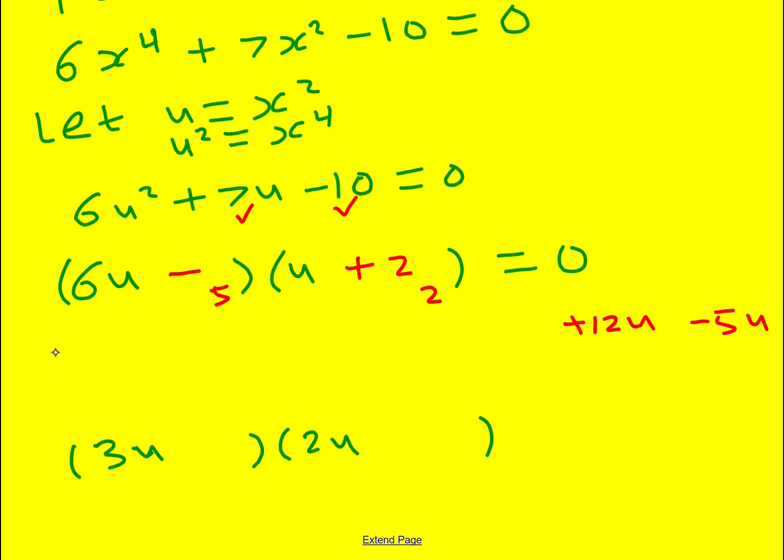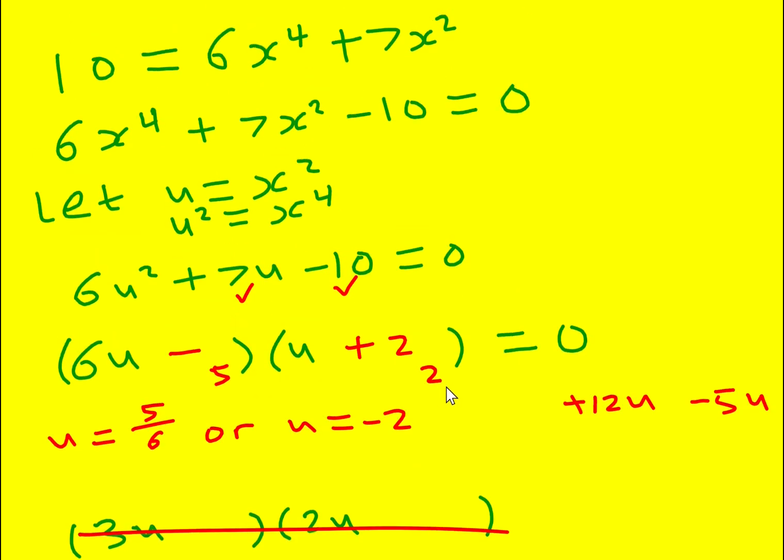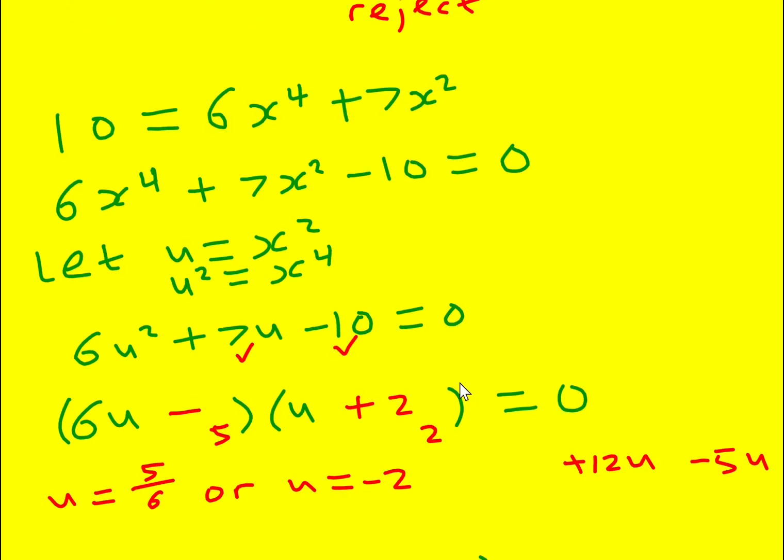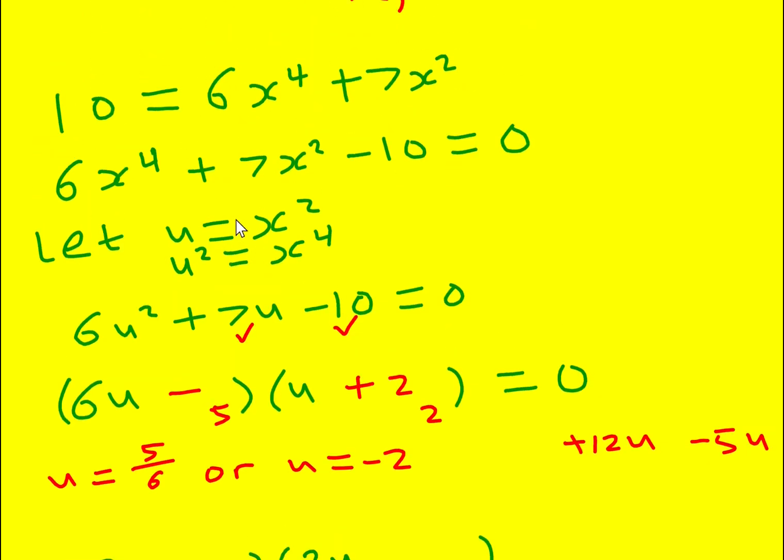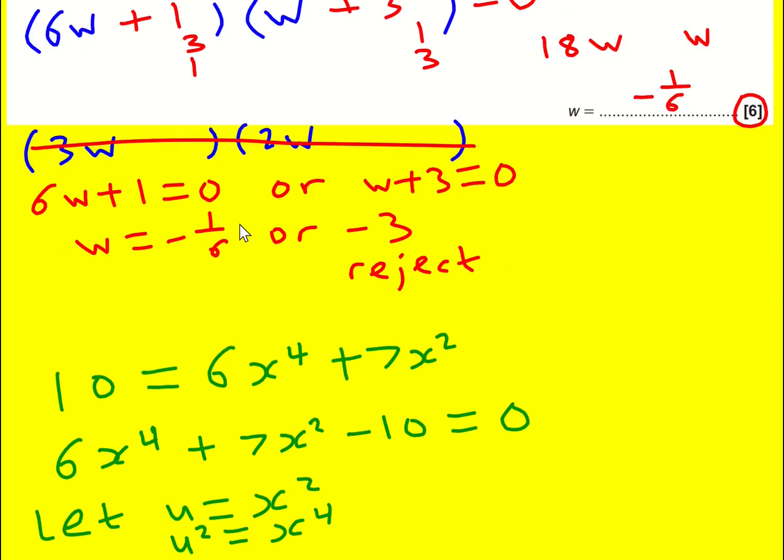And then I'll get that 6u minus 5 is 0, so u is 5 sixths, or u is equal to minus 2. But there's an issue here. Okay, I'm going to cross that one out. Because then I need to work back and think about, I've got u. u is x squared. What am I actually trying to find? Do you remember? Because I'm trying to find w.